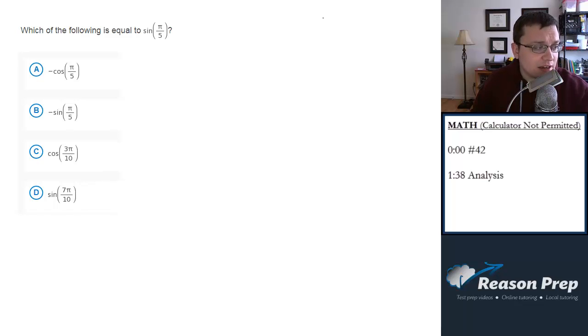If you know the cofunction identity, sine of x equals cosine of pi over 2 minus x.